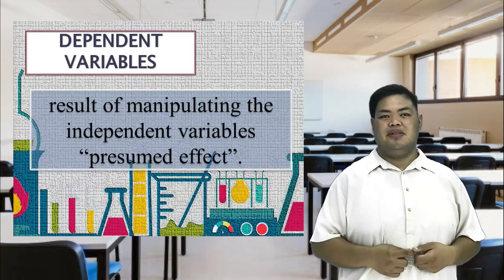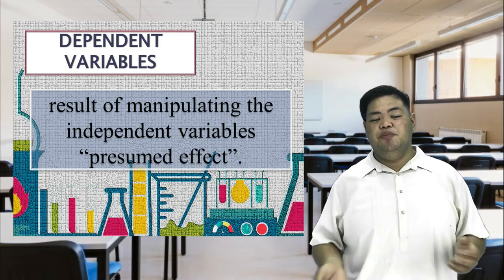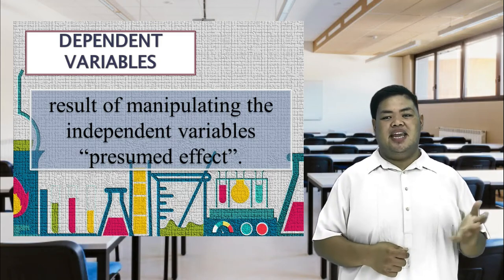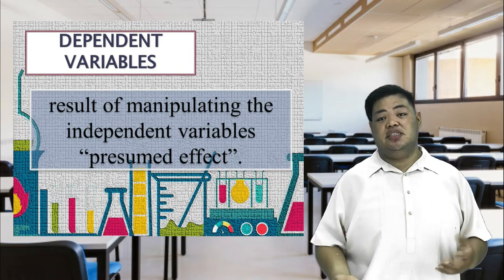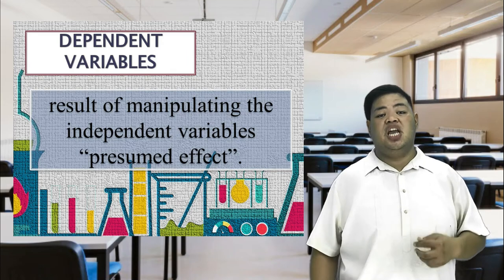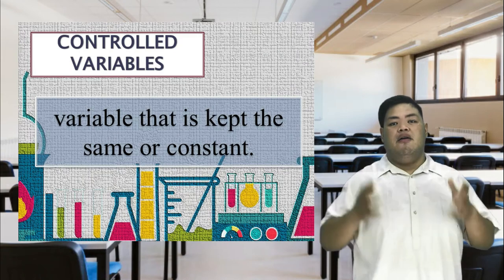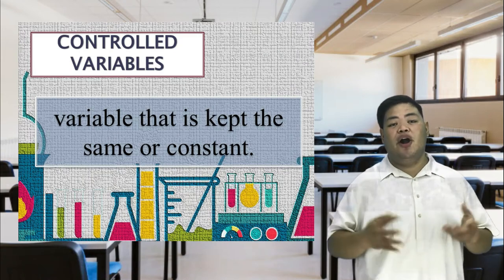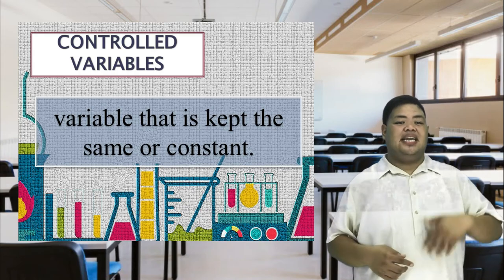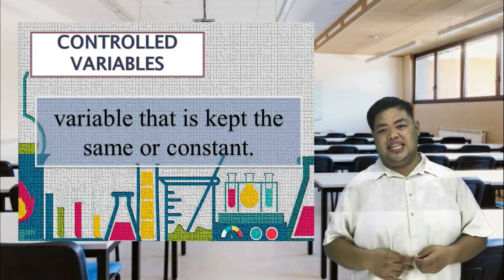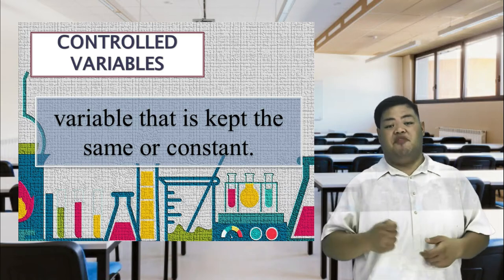Dependent variables — result of manipulating the independent variables, presumed effect. The dependent variables are the things that the scientist focuses his or her observations on to see how they respond to the change made to the independent variable. Controlled variables — variable that is kept the same or constant. Controlled variables are quantities that a scientist wants to remain constant, and she or he must observe them as carefully as the dependent variables.